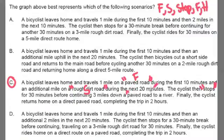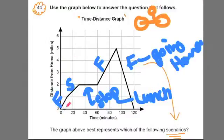That's them stopping, them eating lunch before continuing 3 miles down a paved road to a river. So, they are going down a paved road. They are going fast again because paved road is easy, easy biking. And then, it says finally the cyclist returns home on a direct paved road completing their trip in 2 hours. Well, again, they are going fast. But, this means returning home, they are going to be going at a negative slope. So, we are going to be looking for a steep negative slope. We go back to our original one here, which Conti helped us think about. You know, they went fast, then slowed down, then stopped, then went fast again, and then returned home at that steep slope.